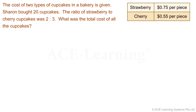The unit cost of the two types of cupcakes are given in the form of a table. Sharon bought 20 cupcakes. The ratio of strawberry to cherry cupcakes was 2 to 3. What was the total cost of all the cupcakes? Let us try to understand the problem with the aid of a diagram. There are two types of cupcakes, strawberry and cherry, and their unit prices are given.